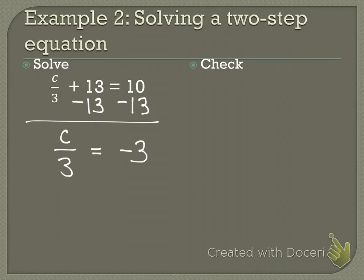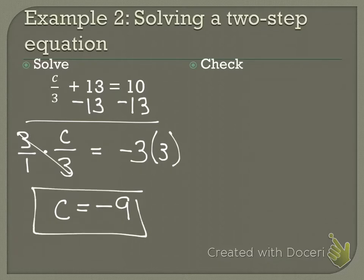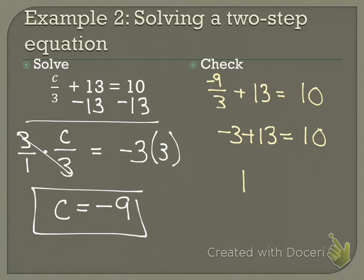C over 3 equals negative 3. Now how do I solve for c? Multiply by the reciprocal, which is 3 over 1. Multiply by 3 over 1, both sides, and c equals negative 9. But I'm not done. I need to go back and check. Negative 9 over 3 plus 13 equals 10. Negative 3 plus 13 equals 10. And then 10 equals 10.